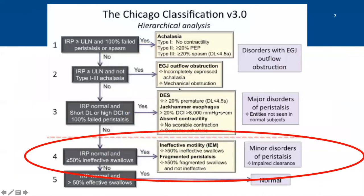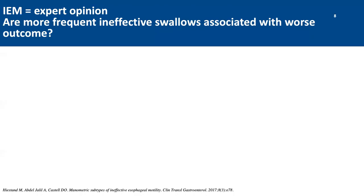Moving on to the hierarchical classification of Chicago version 3, both ineffective esophageal motility and fragmented peristalsis were classified as minor disorders of peristalsis, where IEM was defined as 50% or more of wet swallows being ineffective — either weak or failed — and fragmented peristalsis was defined as 50% or more of swallows being fragmented, meaning effective swallows with large breaks. IEM is more of an expert opinion diagnosis and therefore could have different variations.